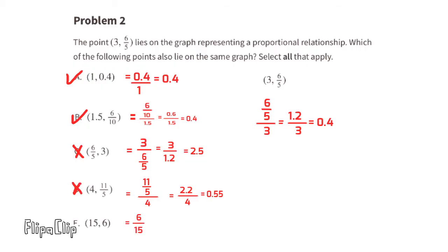For point E: 6 compared to 15. Six is four-tenths the size of 15, and since four-tenths equals four-tenths, these points will lie on the same line of the graph.